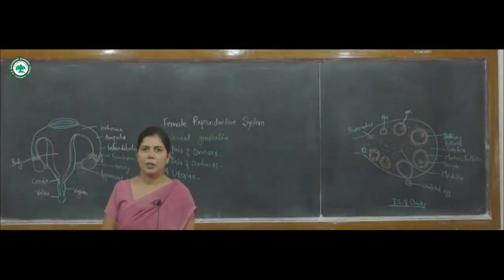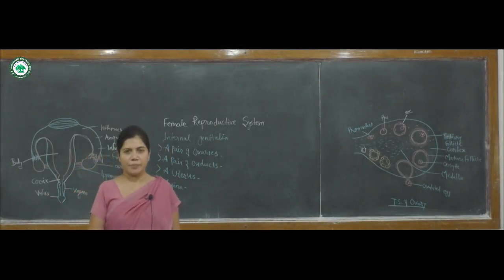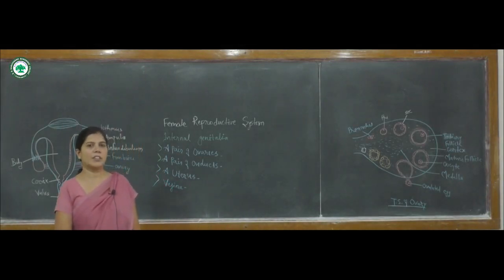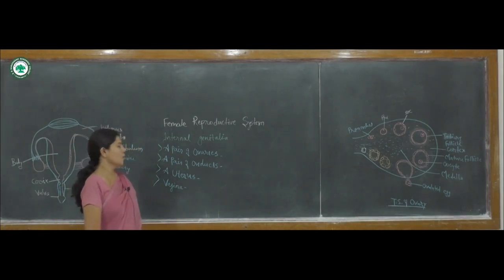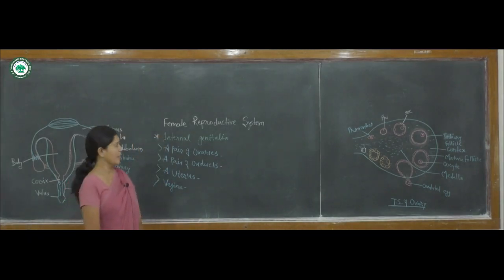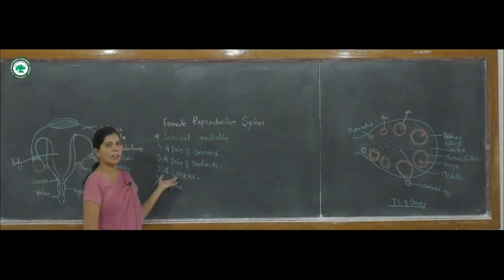Good morning students, myself Komal Walde. Today we are discussing the female reproductive system. The female reproductive system consists of external genitalia as well as internal genitalia. First we will discuss about the internal genitalia, which consists of a pair of ovaries, a pair of oviducts, a single uterus, and vagina.